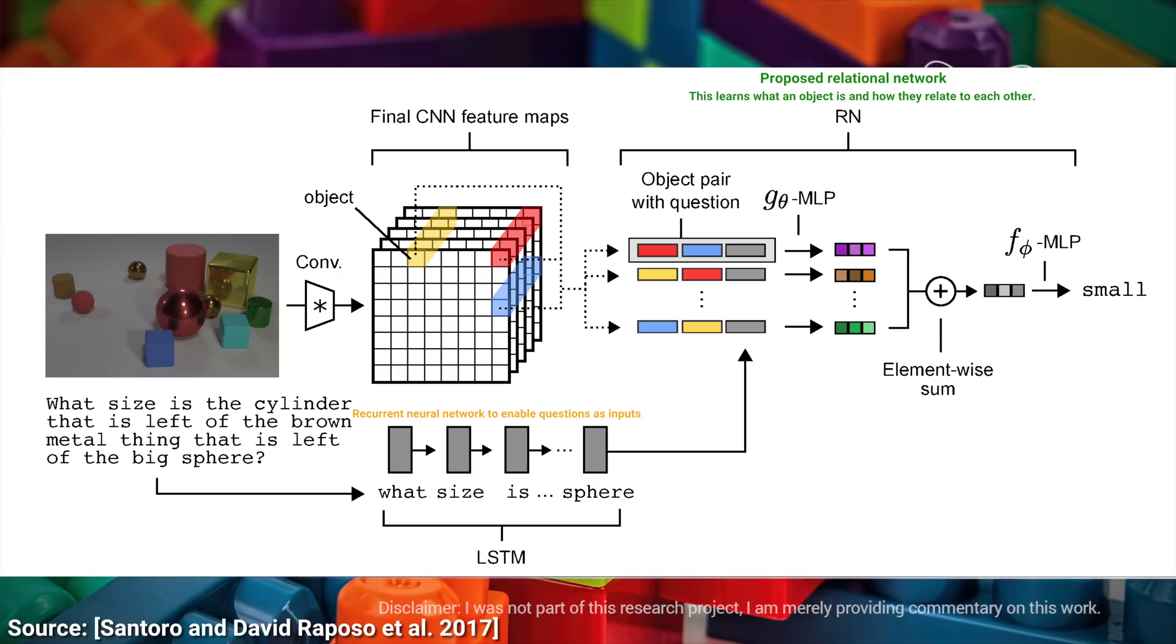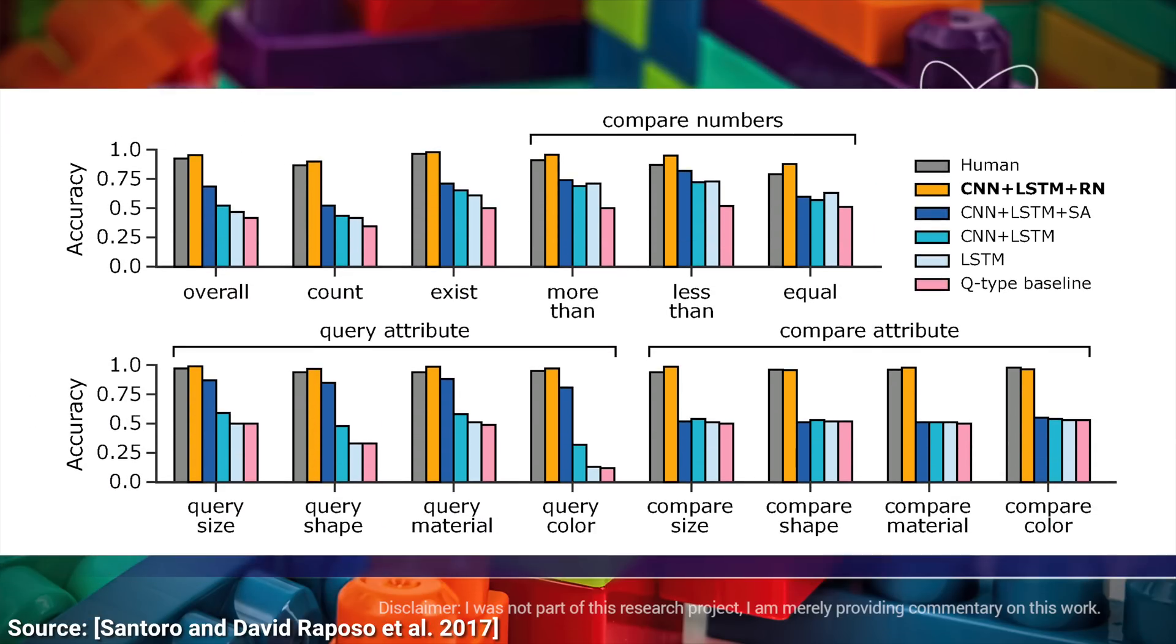As you can see in this result, this relational reasoning also works for three-dimensional scenes as well. The aggregated results in the paper show that this method is not only leaps and bounds beyond the capabilities of already existing algorithms, but, and now, hold on to your papers, in many cases, it also shows superhuman performance.